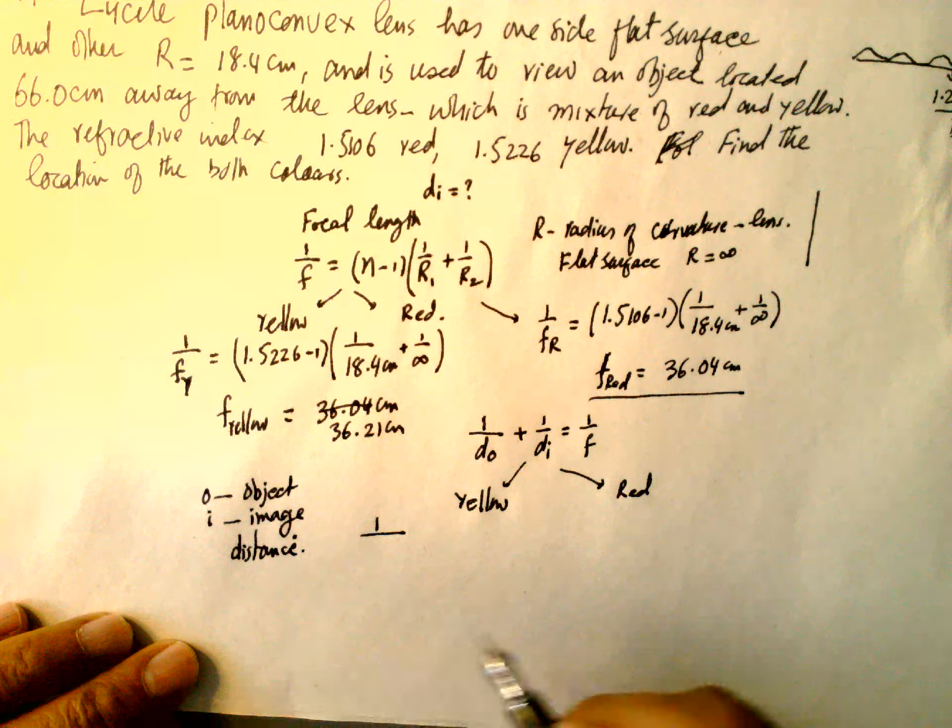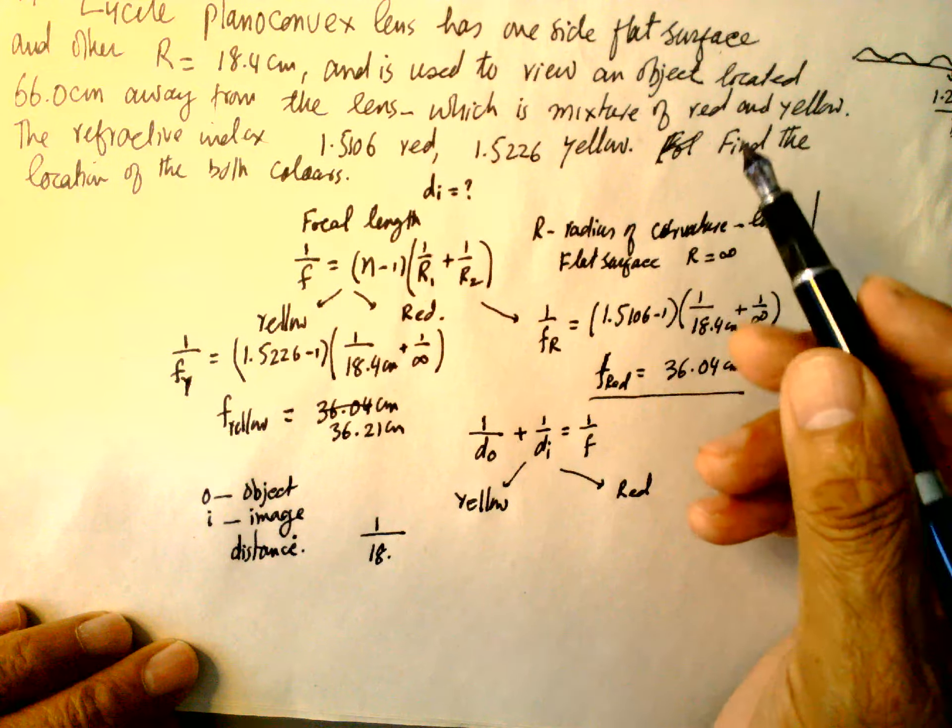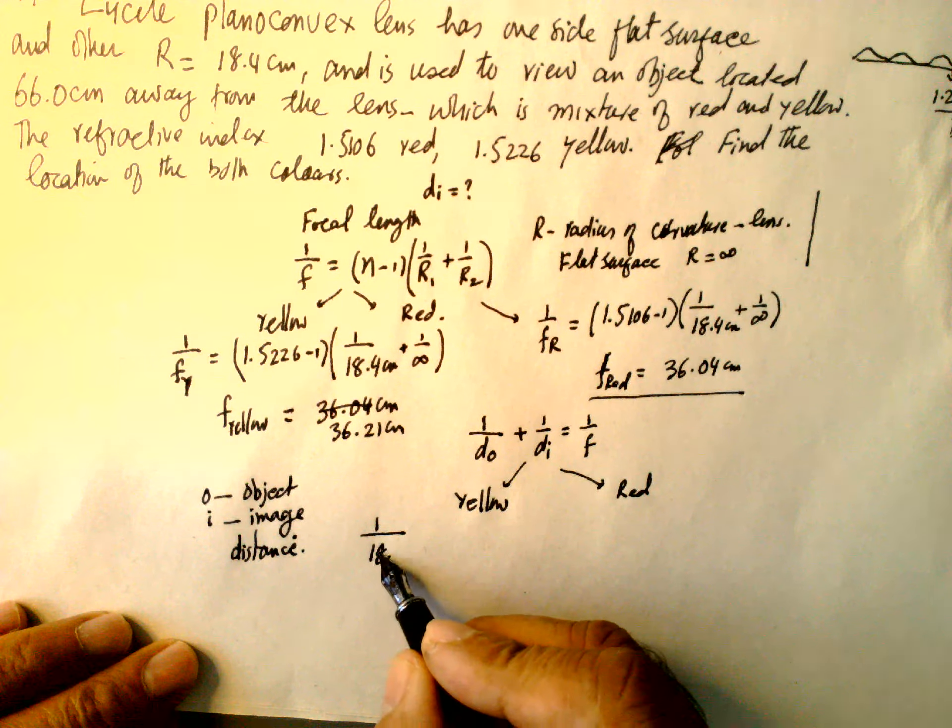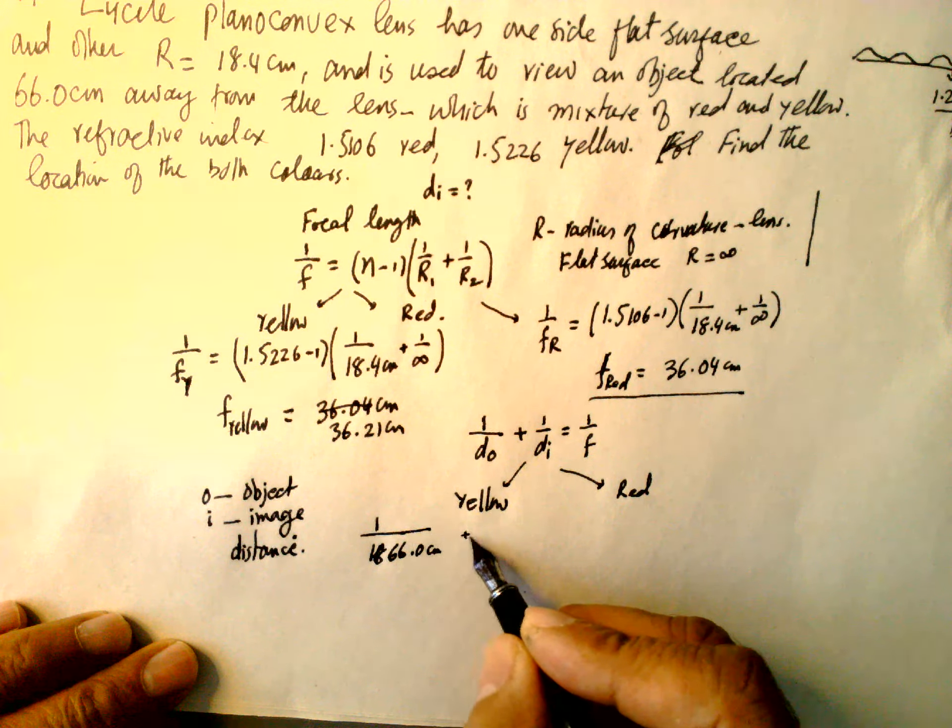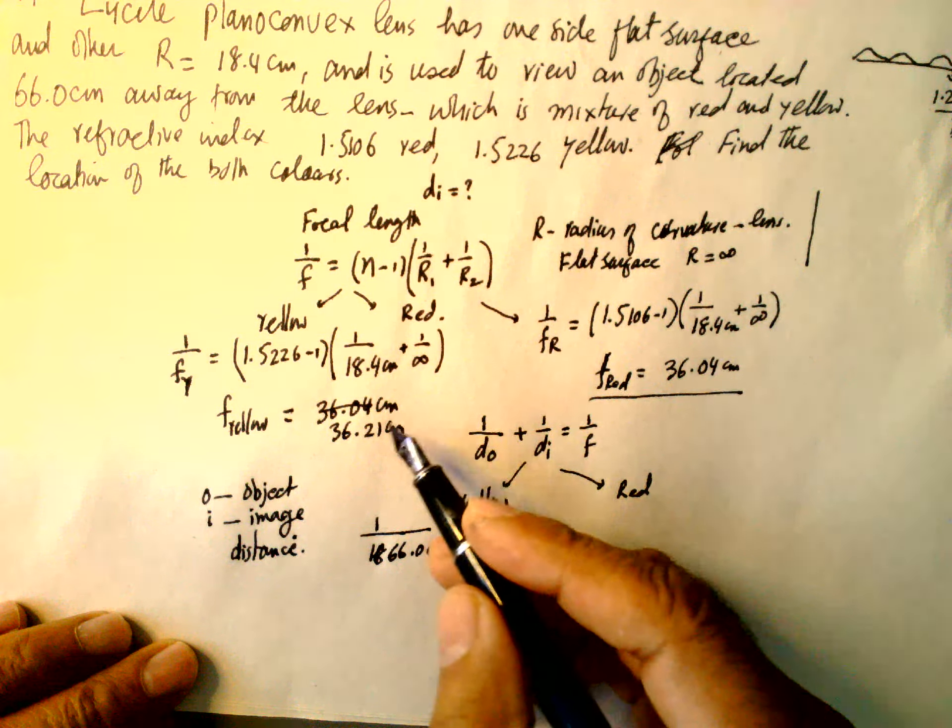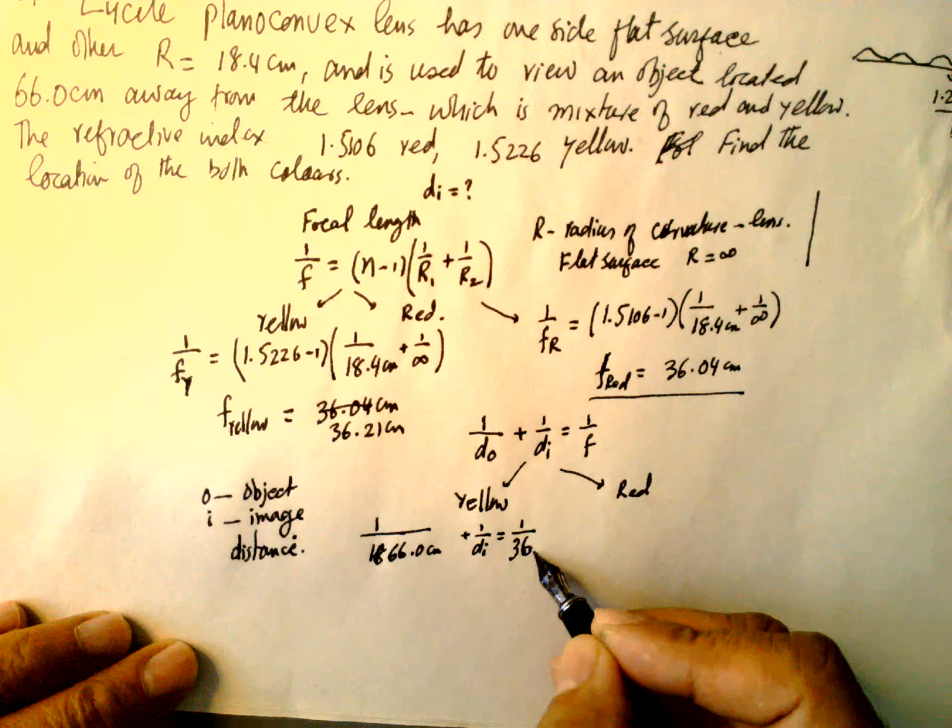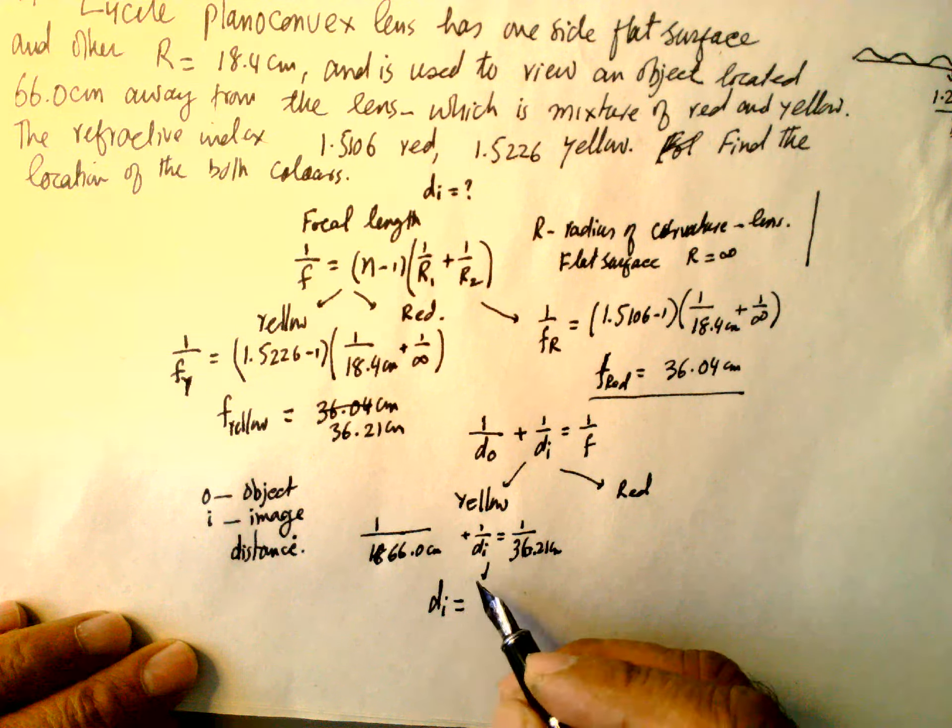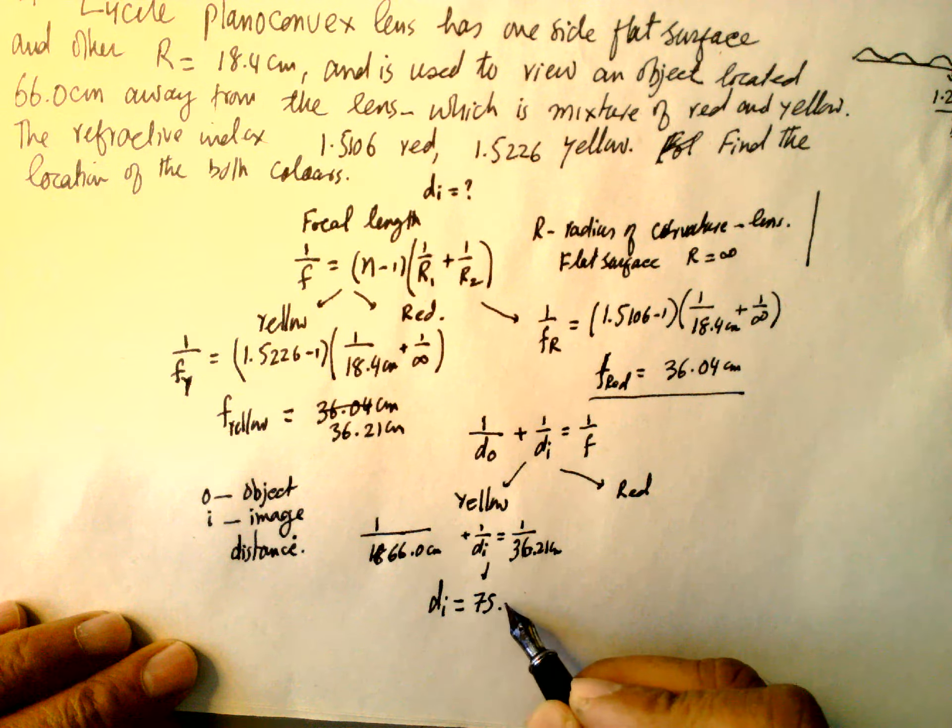1/66.0 cm + 1/d_i = 1/focal length of yellow, so yellow is 36.21 cm. So the image distance for yellow is 75.5 cm.